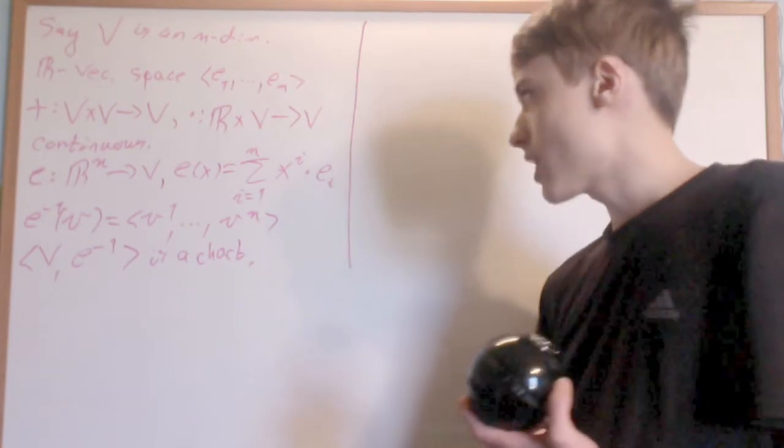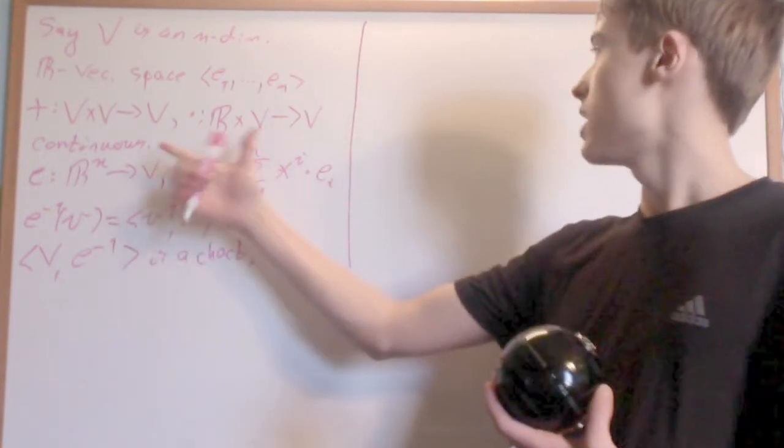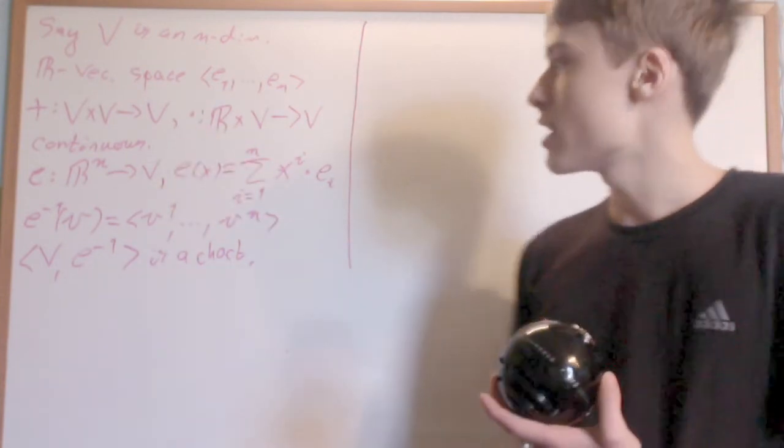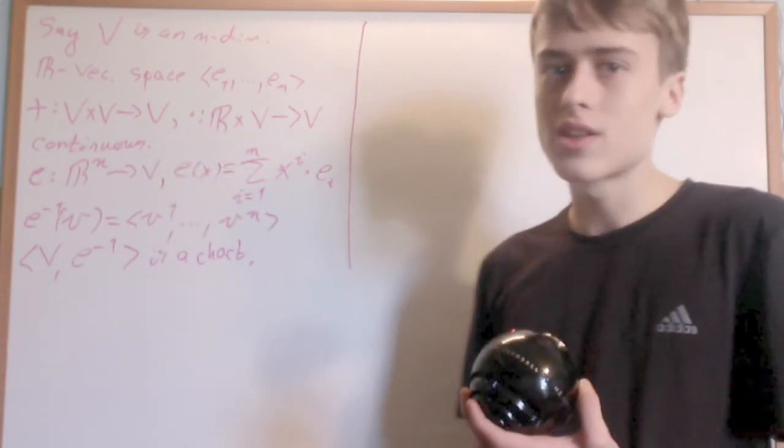That's all we need because every point is contained within V, and the fact that it's Hausdorff is given by the scalar multiplication with R, and the fact that it's second countable is given by the fact that it's a real vector space.